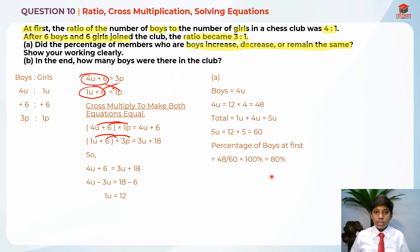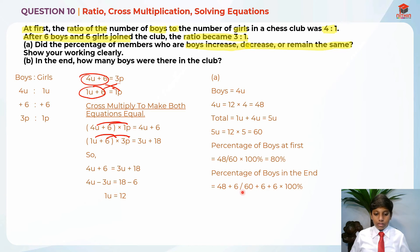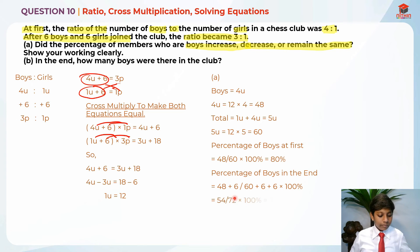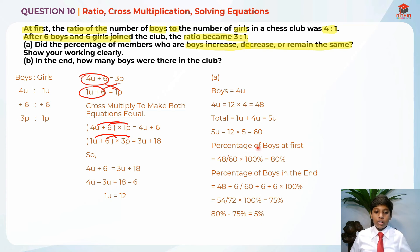After that, I find the percentage of boys in the end, which is 48 plus 6 over 60 plus 6 plus 6 times 100%. I'm adding 6 and 6 because boys and girls are each adding 6. So it's 54 over 72 times 100%, which is 75%. Taking 80% minus 75% gives 5%. Since 75% is less than 80%, the percentage of boys decreased.